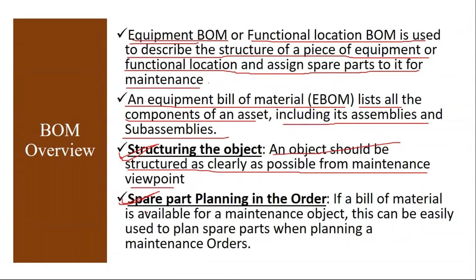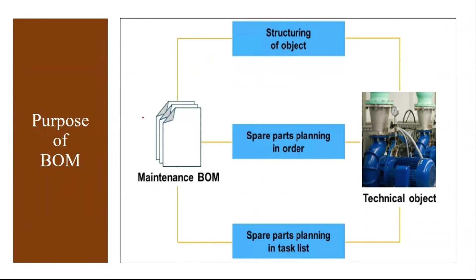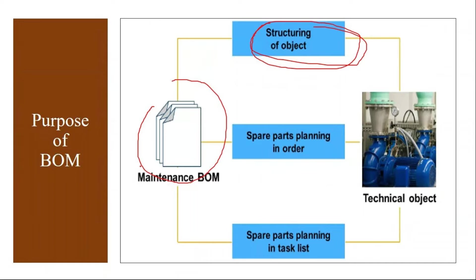Object is nothing but equipment — what spare parts are present and their quantities. Next is spare part planning in the order. If a bill of material is available for a maintenance object, it can be easily used to plan spare parts when planning a maintenance order or service order. When you create a service order, you will have an option called 'object structure'. The moment you click on that object structure, it will give you the BOM, and from there you can select the components.